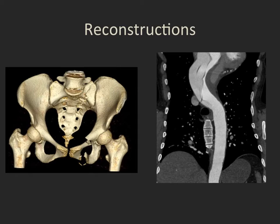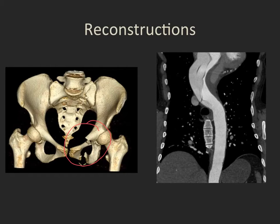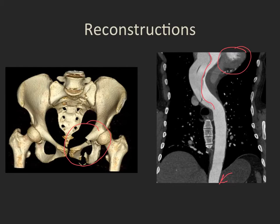On the left is a 3D reconstruction of the pelvis in a patient with multiple complex pelvic fractures, which can be rotated and manipulated for the orthopedic surgeon to plan surgery. On the right is a multi-planar reconstruction of the thoracic aorta in a patient with an aortic dissection, where the technologist has laid out the aorta from the heart down through the diaphragm, allowing us to see the plane of dissection from the ascending into the descending aorta in a single image.